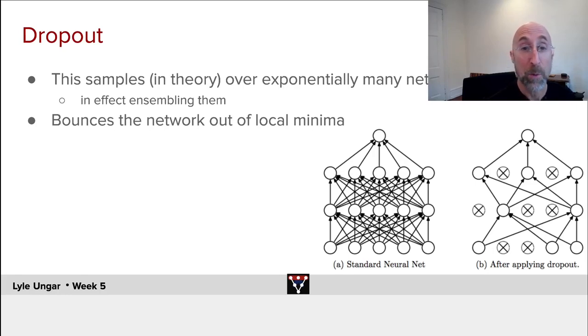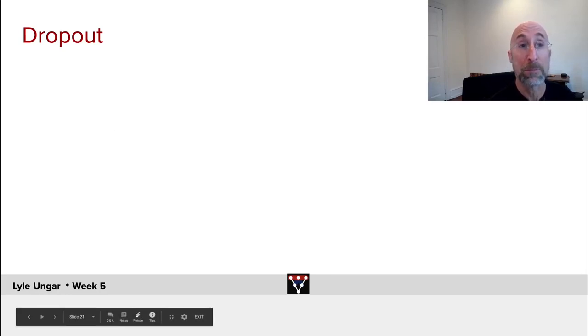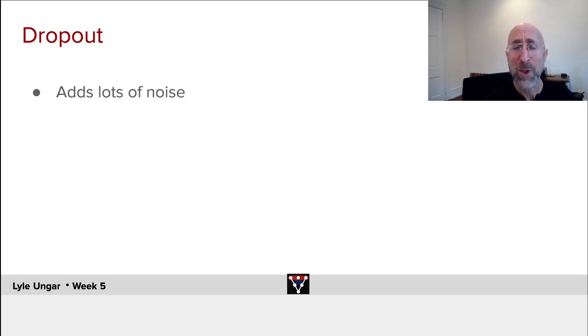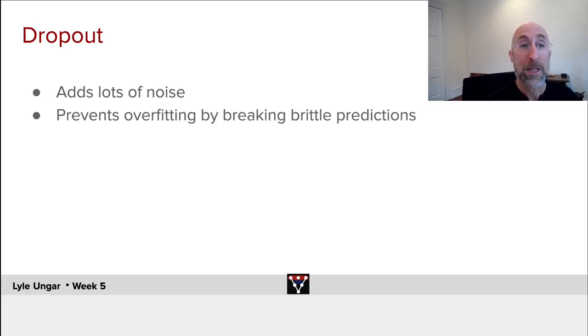It tends to get the network out of local minima. More precisely, this adds lots of noise—every mini-batch is going in a different direction. This prevents overfitting. This is a really strong form of regularization. You're not going to get stuck in some local minimum because you've just dropped half of the weights and tried something different.